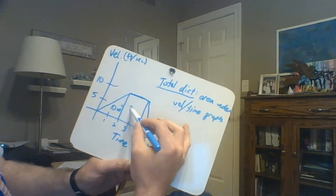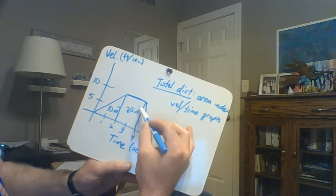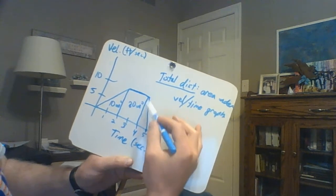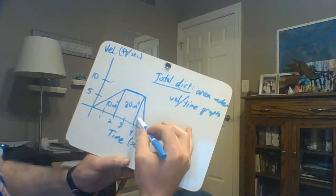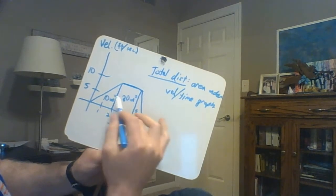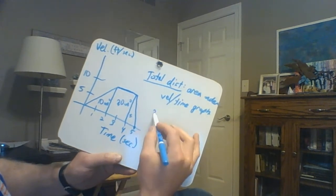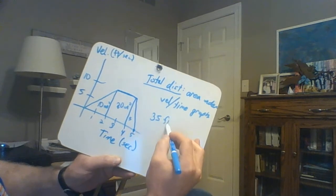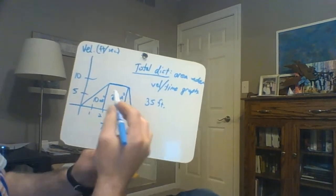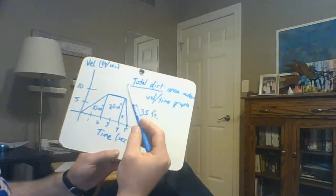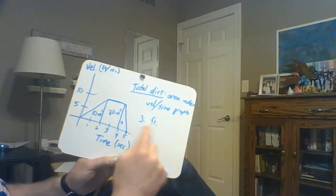2 times 10 makes this 20 square units. And this is 1 times 10 divided by 2. This is 5. So if I add up 35, so I went 35 feet in the course of this scenario.